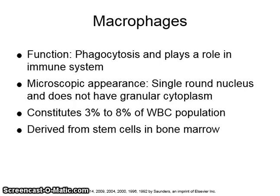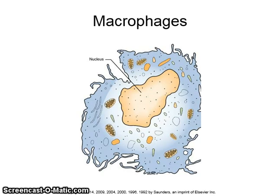Monocytes circulating in the blood become macrophages in tissue. Their function is phagocytosis and they also play a role in the immune system. Their microscopic appearance is a single round nucleus and they do not have granular cytoplasm. Monocytes constitute 3 to 8% of the white blood cell population and are derived from stem cells in bone marrow. See figure 2-12 on page 40 of your textbook.